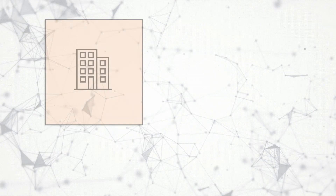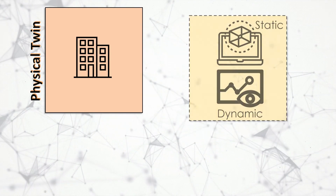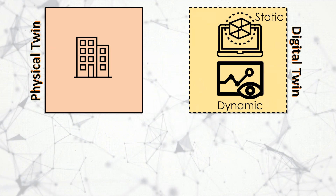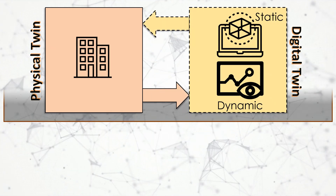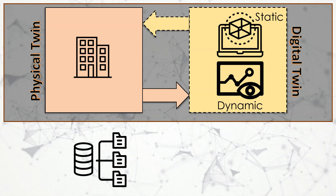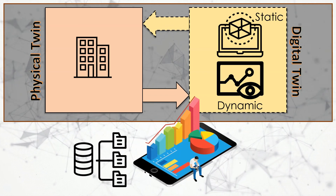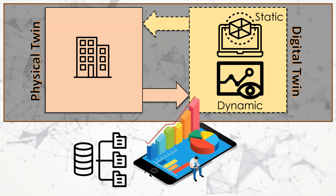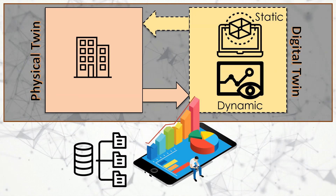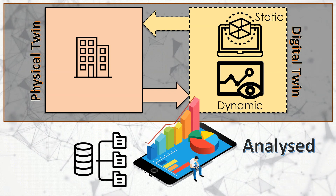With the physical twin and the digital twin and all the required datasets described, the next important step is to store big data and analyze it. Data on its own does not create added value to a product or system — it needs to be analyzed and visualized.